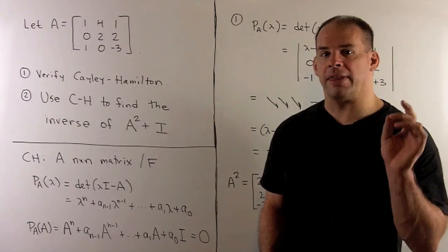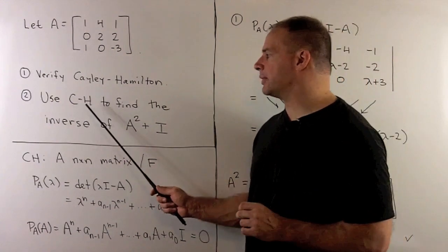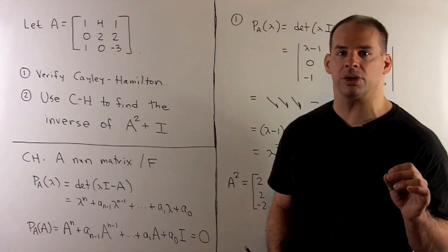We want to verify the Cayley-Hamilton theorem for A. Then, we want to use the Cayley-Hamilton theorem to find the inverse of A squared plus the identity matrix.